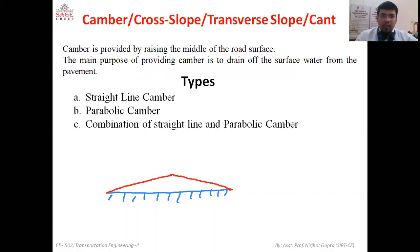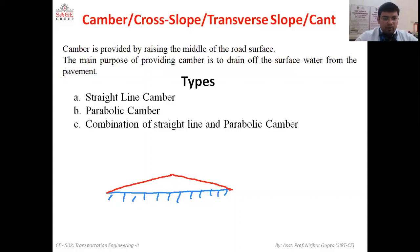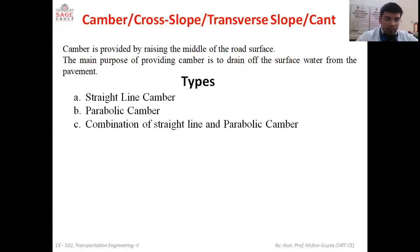The main purpose of camber is drainage of surface water, and there are three different types of camber depending on how it is provided and which type suits the road. We have cement concrete pavements, bituminous pavements, and WBM roads. The straight line camber is provided on cement concrete roads.